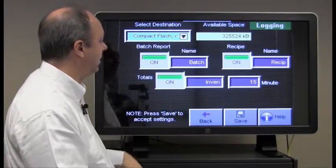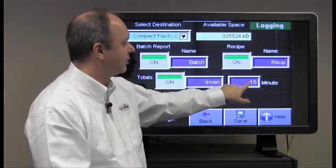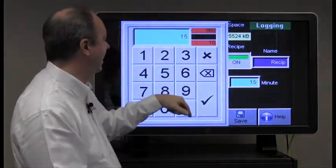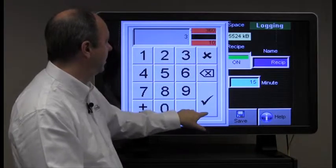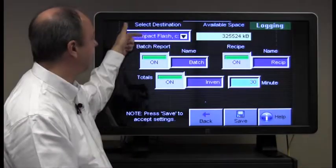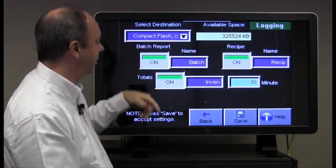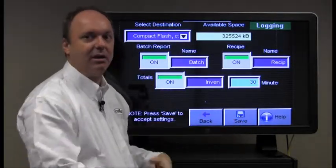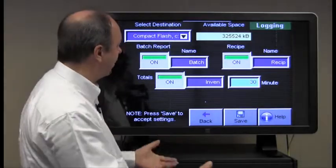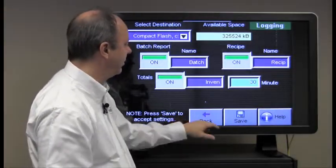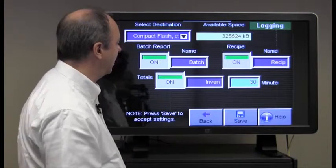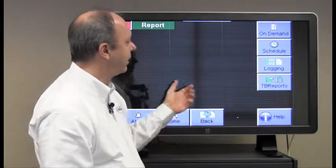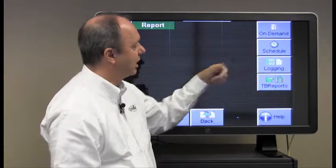The recipe would put out the recipe totals for the particular recipe that you're running. The totals would be the inventory totals and you could select how often you want that data to go out to your destination. Being a compact flash card or USB or whatever you chose. And once you have this set up, you push the save button and it will log forevermore. So you click save and it will start to do that to whatever the destination was done. So that's logging.